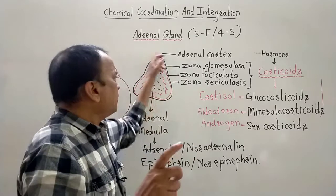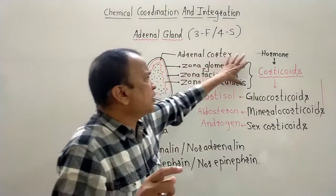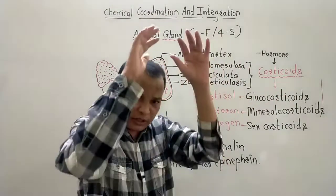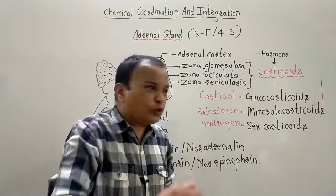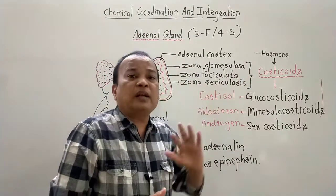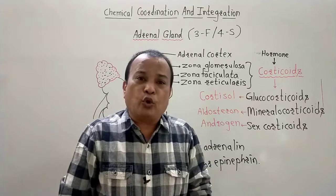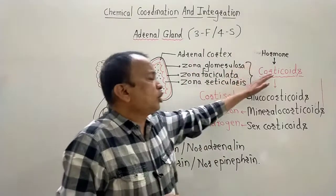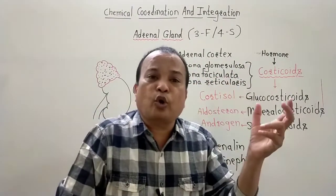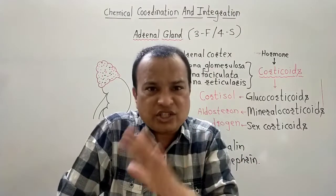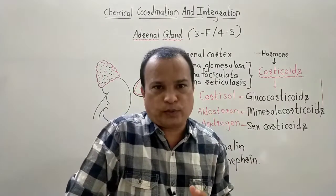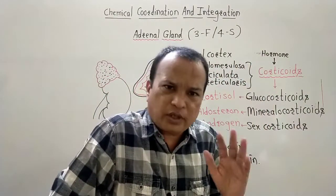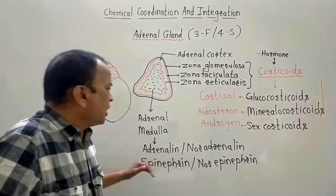If there is a disorder in the hormone secretion of the adrenal cortex, two conditions arise. Hyposecretion of corticoids from the adrenal gland results in a disorder known as Addison's Disease. Hyper secretion of corticoids results in Cushing Syndrome or Cushing's Disease. These are the two main disorders associated with the adrenal gland. That is everything about the Adrenal Gland.